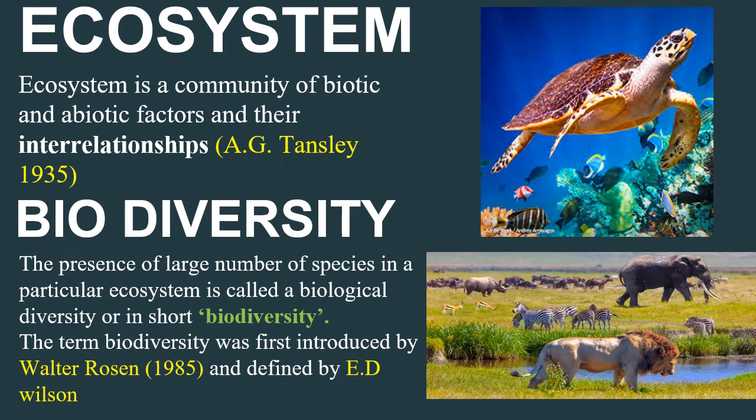Now I am going to explain about ecosystem. Ecosystem is a community of biotic and abiotic factors and their interrelationships. It was introduced by A.G. Tansley in the year 1935. Biotic factors refer only to living things — it includes producers, consumers, and decomposers. Producers are plants.